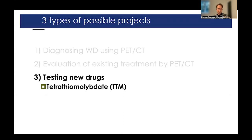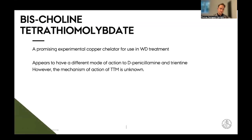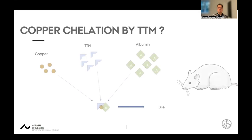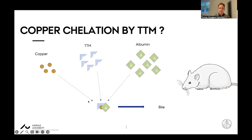The third possible project is the testing of new drugs. I will use tetrathiomolybdate, also known as WTX101 or ALXN1840, as some of you know. My PhD student Frederick did the work here. At the time we started conducting these studies in collaboration with Alexion Therapeutics, it was a promising experimental copper chelator for use in Wilson disease treatment. It appeared to have a different mode of action compared to D-penicillamine and trientine. But the precise action of TTM was unknown at this time and still is to some extent.